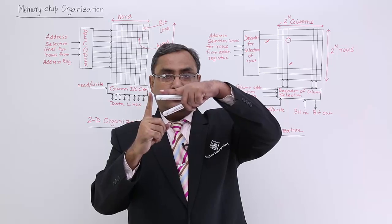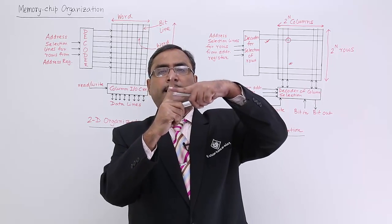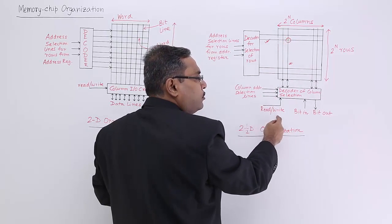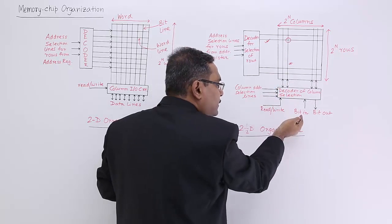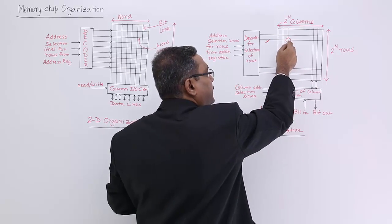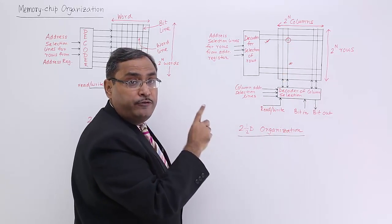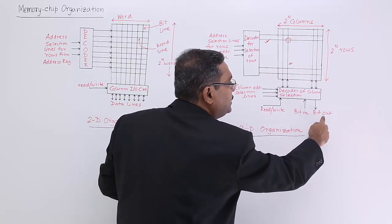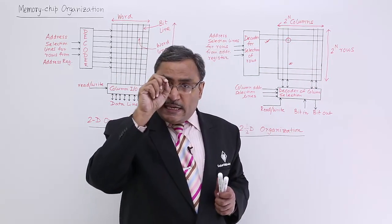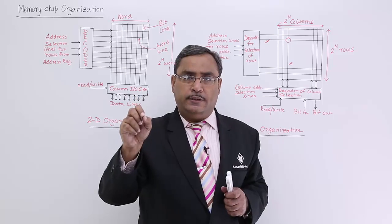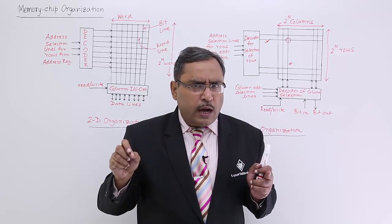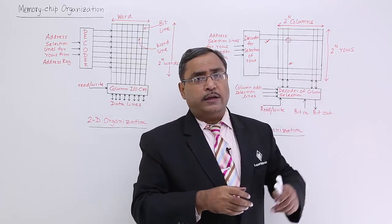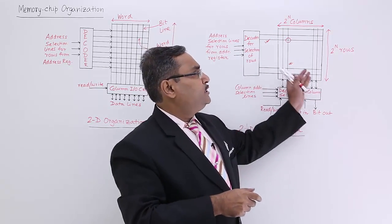At the intersection of the row line and column line, we have one bit. The read/write control line decides whether we are writing — in which case a bit comes in through bit-in — or reading — in which case the data bit comes out through the bit-out line. Each location contains a single bit. If a word size of 64 bits is needed, 64 such parallel circuits will be working; for 32 bits, 32 such parallel circuits operate in parallel.